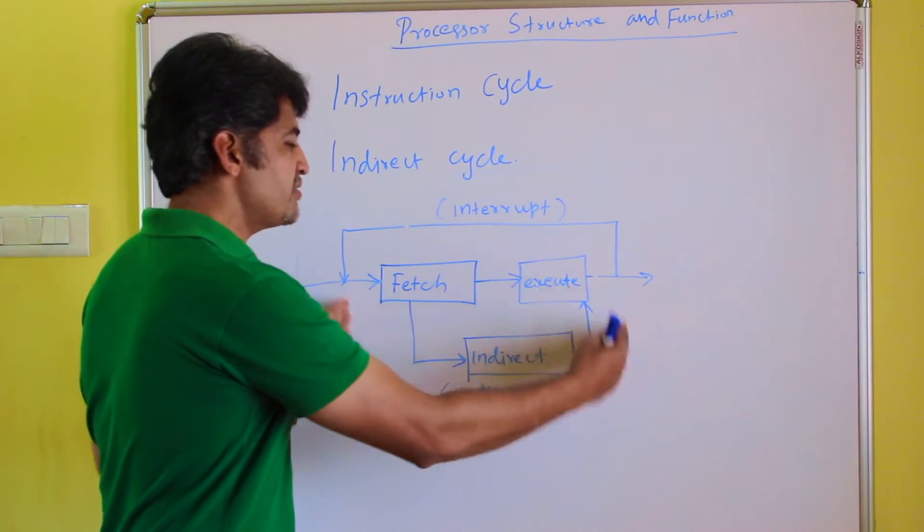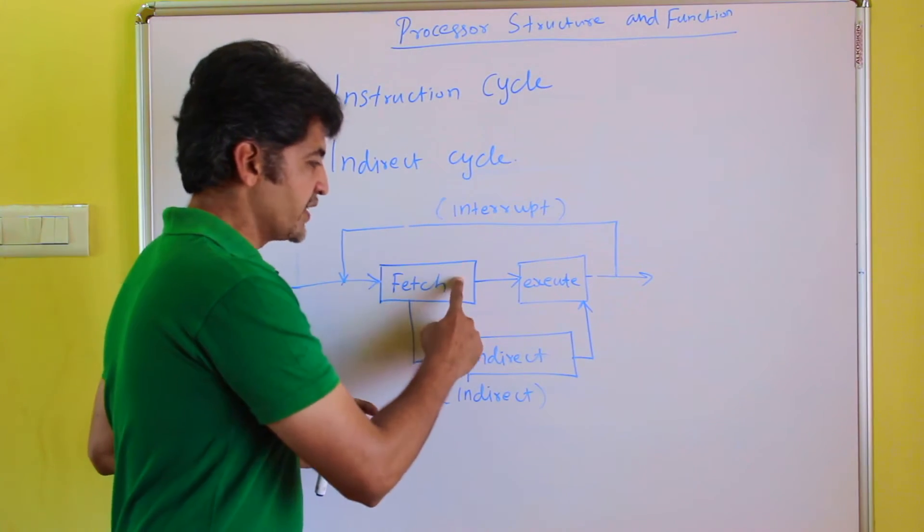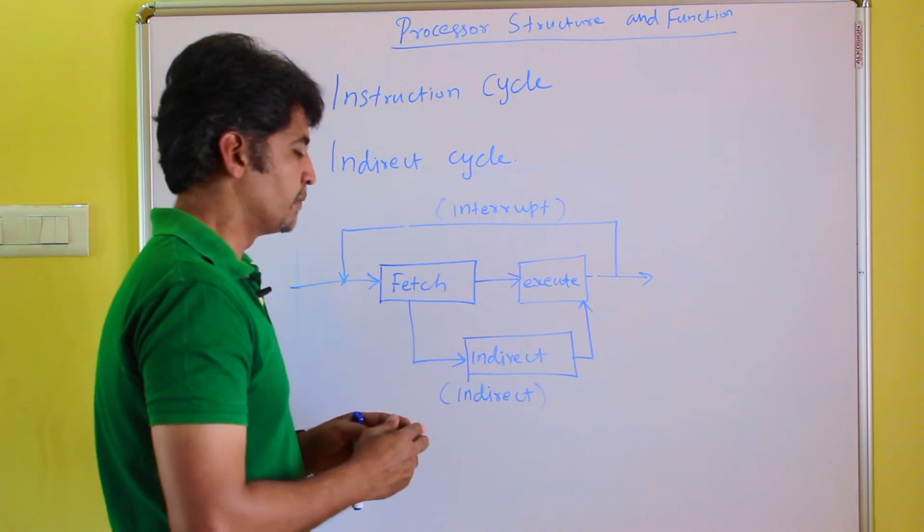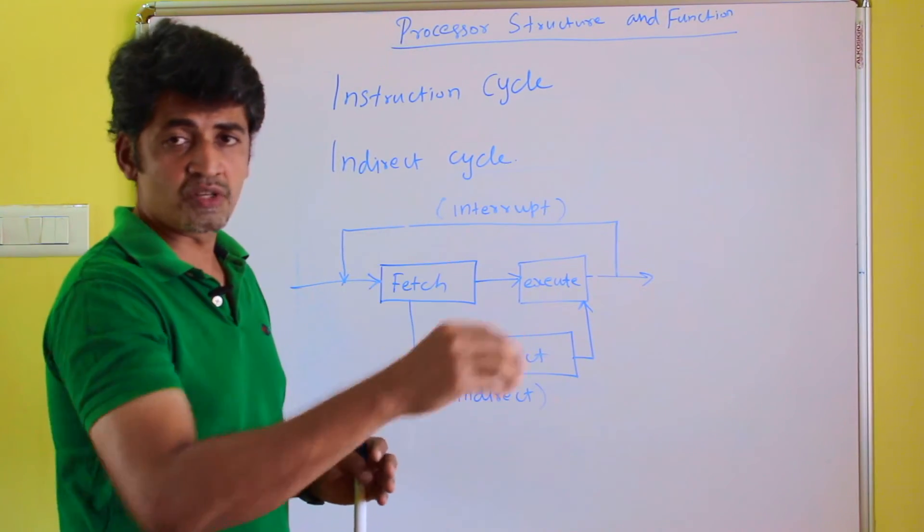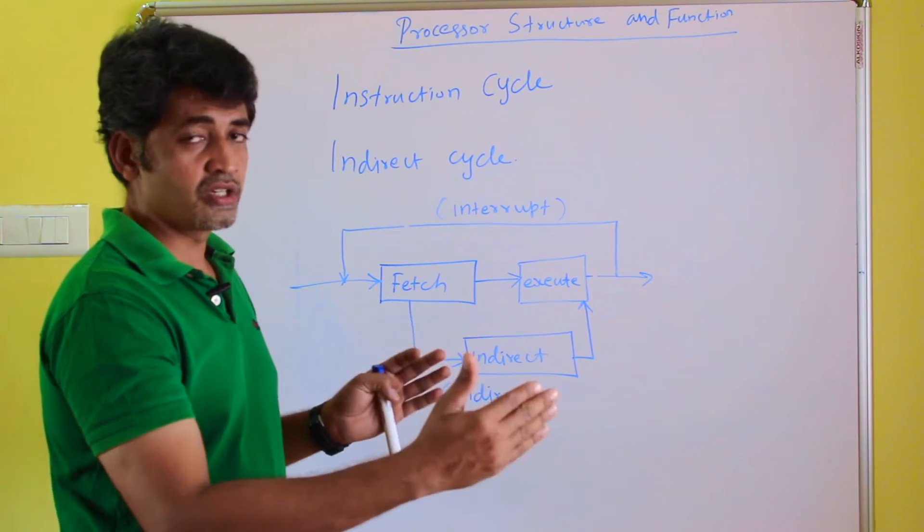With the basic instruction cycle, only two sub-cycles are there: one is the fetch cycle and the second one is the execute cycle. But during execution, the processor or the operating system identifies if the instruction uses indirect addressing modes.